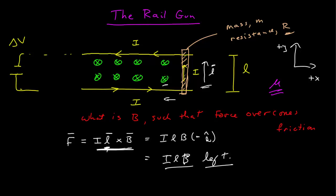And so that's the force. We know B is what we're trying to find. L is given here — it's the length of the rails. Note that this L vector is the length of the bar through which current is flowing, so the current only flows through the bar for a length of this L. We don't necessarily know I, but we can calculate that from Ohm's law. So the force is delta V over the resistance in the wire times L times B. That's the magnetic force.